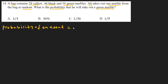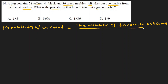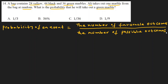The number of favorable outcomes divided by the number of possible outcomes. The number of favorable outcomes is the number of wanted outcomes, or the number of the event.